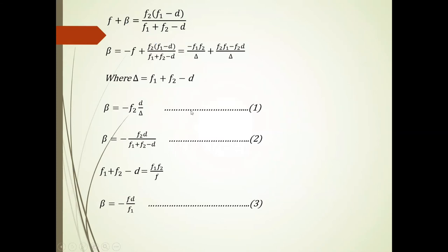Now F plus beta is equal to F2 into F1 minus D upon F1 plus F2 minus D. We have taken this equation of F. So beta is equal to minus F plus F2 into F1 minus D upon F1 plus F2 minus D.